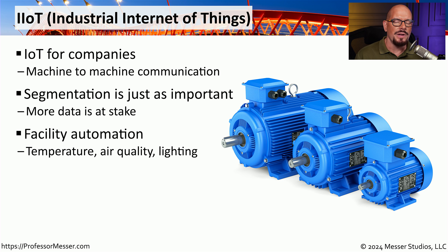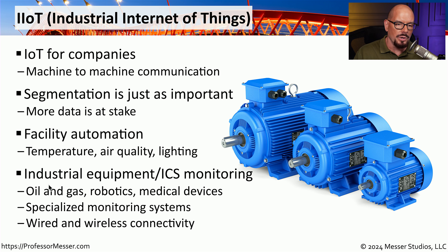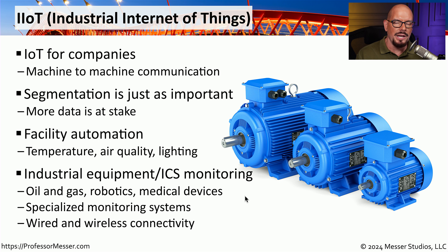You can also have automation within Industrial Internet of Things configurations. Making sure these networks are operating will ensure that oil and gas systems continue to work, or that medical devices in a hospital are able to communicate properly with other medical devices. When it comes to critical infrastructure or when lives are on the line, we need to make sure that these IIoT devices are able to communicate properly, and segmenting the network might be the perfect choice for network configuration.